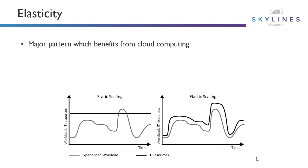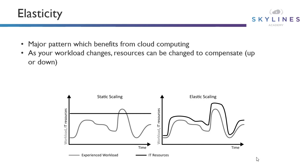A static scaling option, which typically we would find on-premises, gives us fixed resources available, so we over-allocate and try to account for that peak to make sure we have enough resources for it. As your workload changes in elastic workloads, resources can be changed to compensate — and that's up or down.